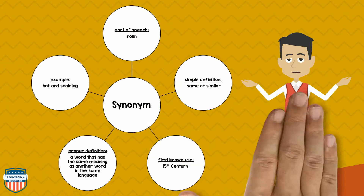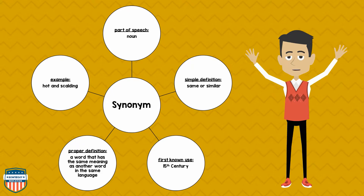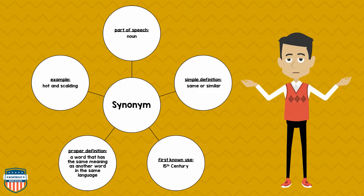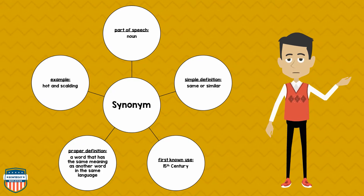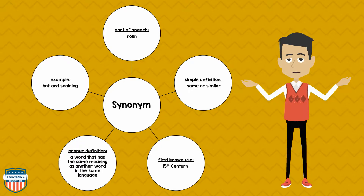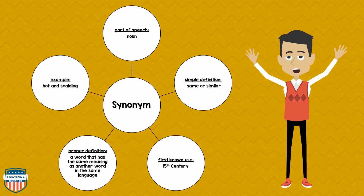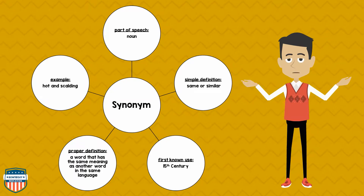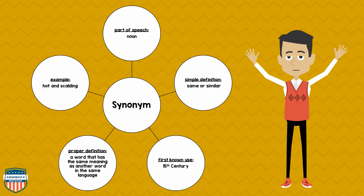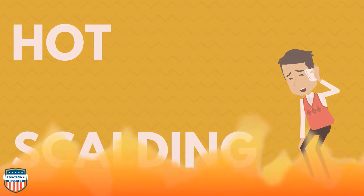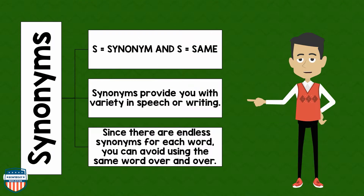First off, let's learn about synonyms. The part of speech of a synonym is a noun. A simple definition: same or similar. The first known use is in the 15th century. The proper definition is a word that has the same meaning as another word in the same language. An example is hot and scalding. To remember the meaning of synonym: S is for synonym, and S is for same.